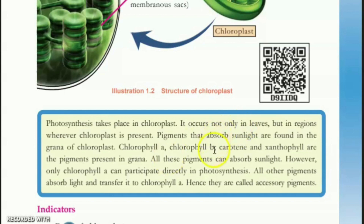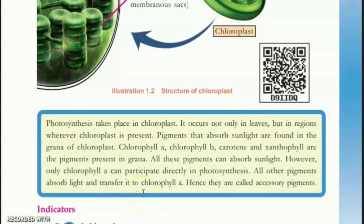What is carotene? Carotene is an orange pigment. All these pigments can absorb sunlight, but only chlorophyll A can participate directly in photosynthesis. All other pigments absorb light and transfer it to chlorophyll A. Chlorophyll B, carotene, and xanthophyll are all called accessory pigments.